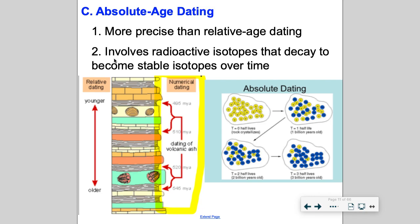Absolute age dating involves radioactive isotopes. Radioactive isotopes decay into more stable isotopes over time. Carbon actually has three isotopes. If you notice on the periodic table, carbon is number six. There's carbon-12, carbon-13, and carbon-14.